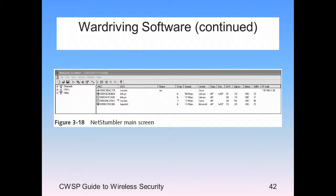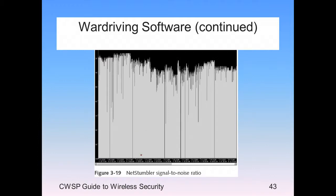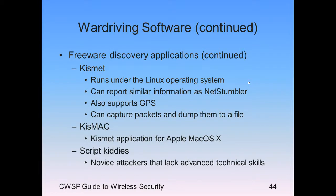This is NetStumbler — VIStumbler looks very similar. We have channels, SSIDs, and filters. It tells you the channel they're on, the speed, the vendor, whether it's an access point, what kind of security — like WEP — and the signal-to-noise ratio. When we talk about signal strength, values like -78 or -73 dB — the lower the number, the better. This is a NetStumbler signal-to-noise ratio graph showing how much signal versus noise and the ratio between them.